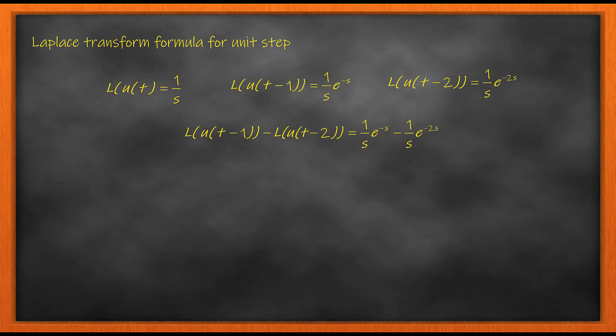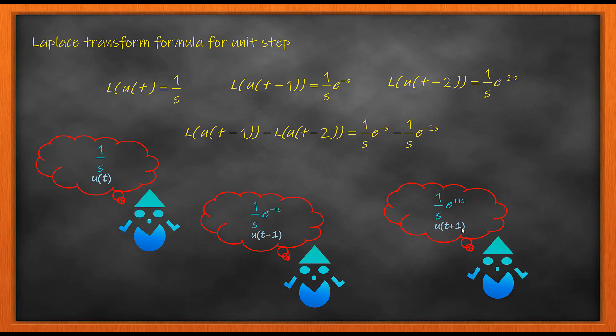The Laplace transform for unit step is given as 1/s. For a shifted unit step it is 1/s e^(-s). If the shift is towards the left side it is plus 1s, towards the minus side it is minus 1s. If the shift is by 2 units it is given by minus 2s.